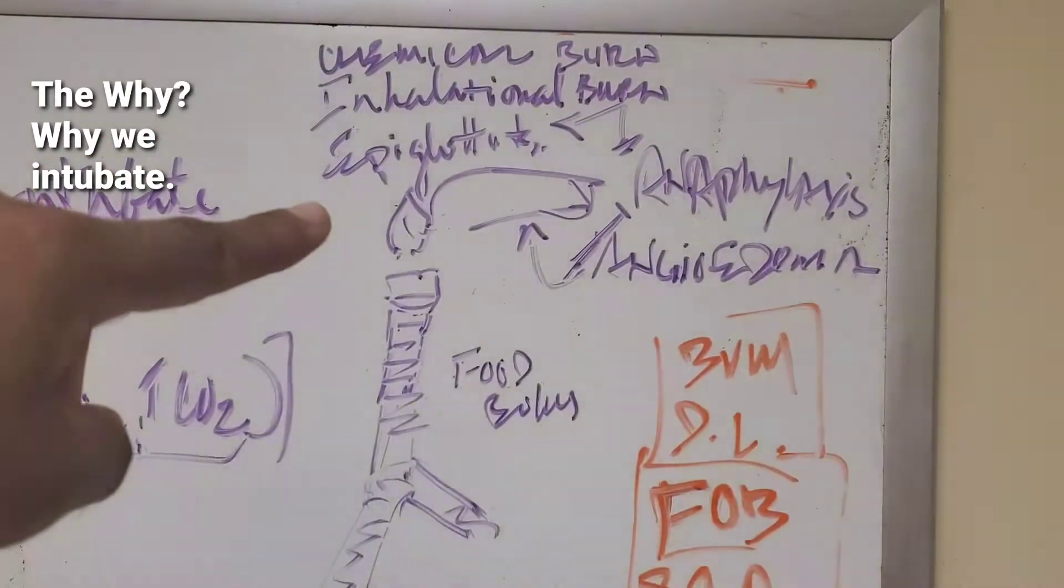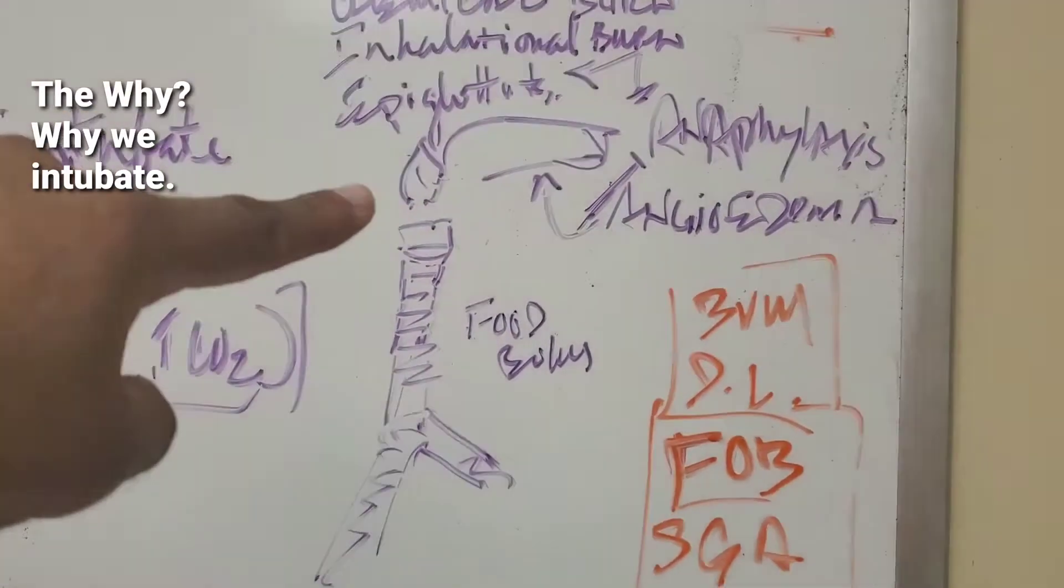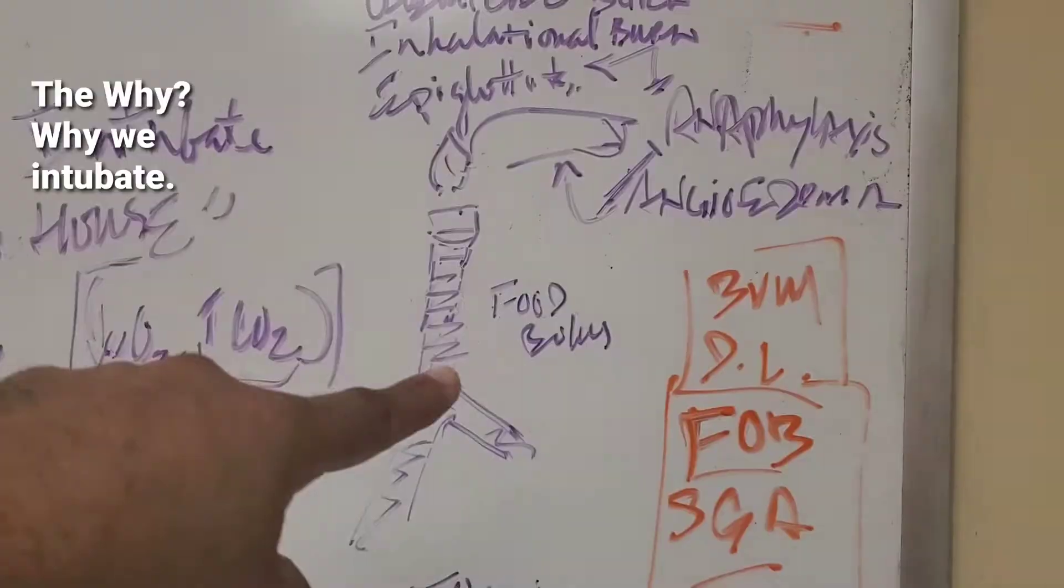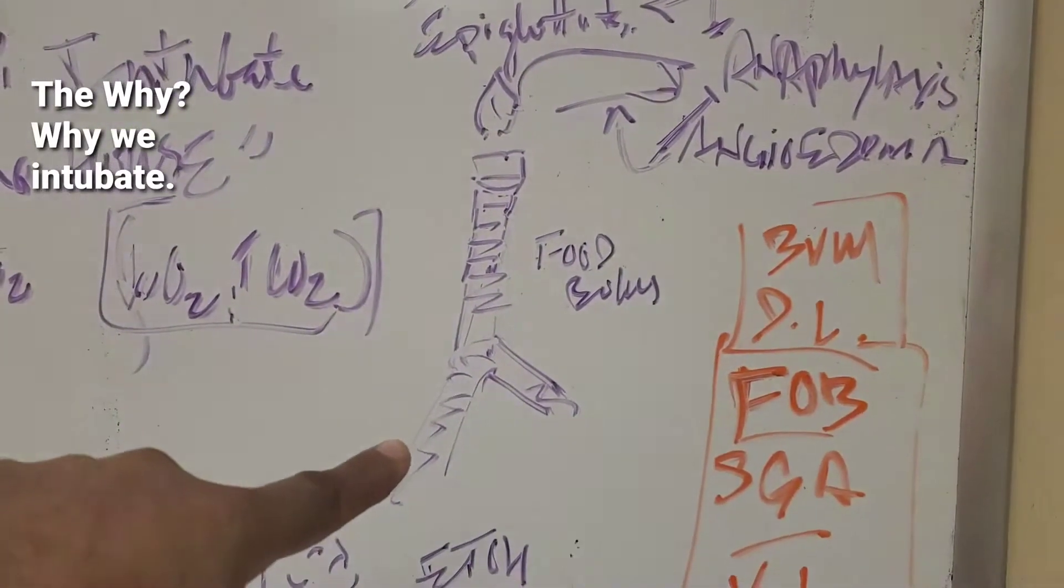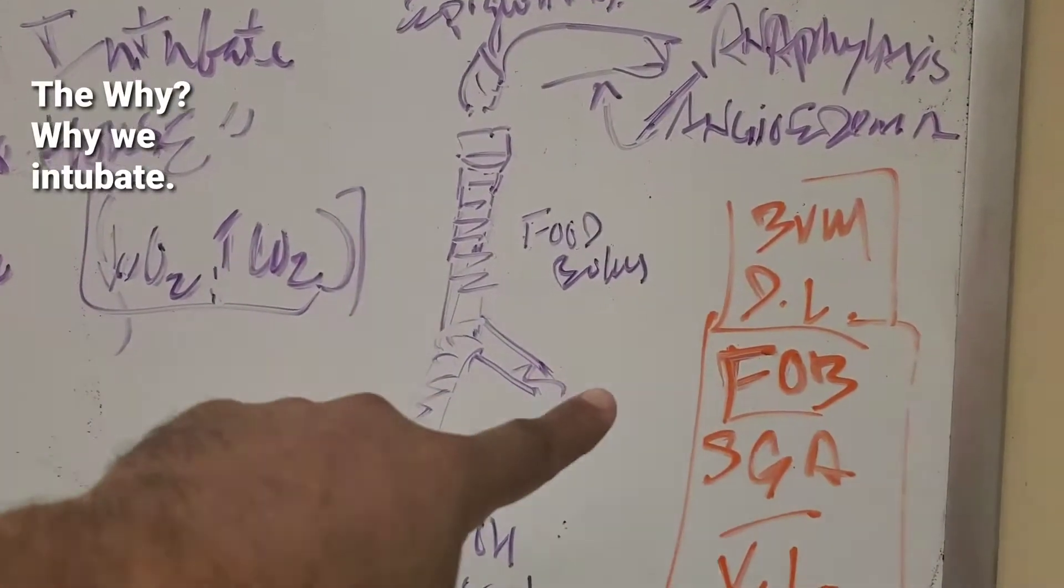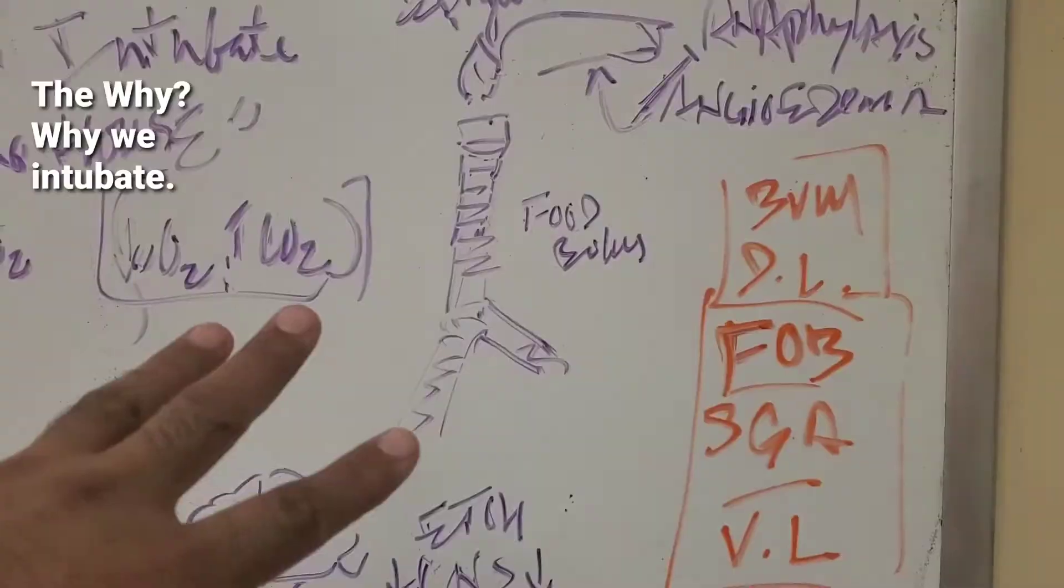Epiglottitis, even anaphylaxis or angioedema can affect the epiglottis, food bolus anywhere along this track. God forbid it's at the carina or high up. Better off to have blocked off food in the right main stem or left. Not both at the same time. You can survive with one lung.